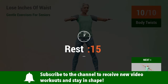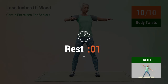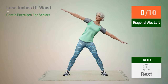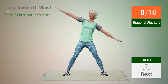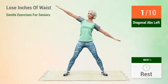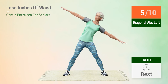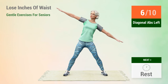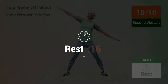Rest time. Next exercise: diagonal abs. In 5, 4, 3, 2, 1, go. 1, 2, 3, 4, 5, 6, 7, 8, 9, 10. Rest time.